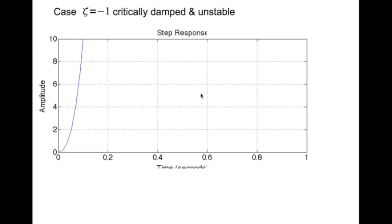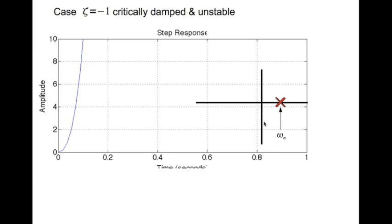Looking at where the poles are in the complex plane — they are on the right-hand side, both at the same location, which is a distance of omega_n from the imaginary axis.